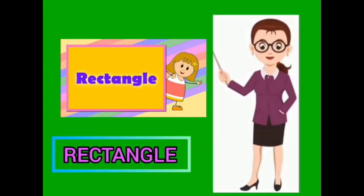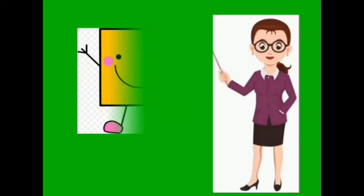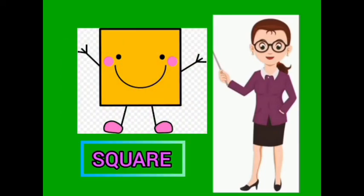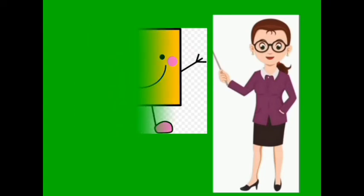This shape is a rectangle. What is this children? Rectangle. And this is a square. What is this? A square.